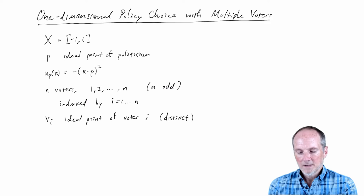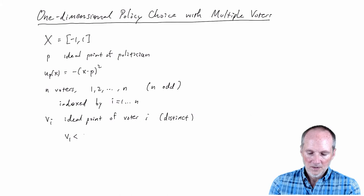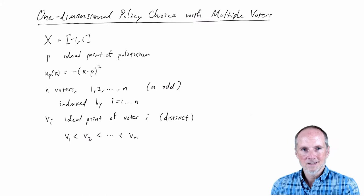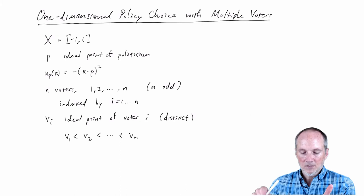It's without loss of generality to assume that voter 1 is the leftmost voter, voter 2 is the next person to the right, and so on. If the ordering were different, we could just assign the numbers to the voters differently — we can rearrange them. So I put the ideal points in order and number the voters so that ideal points are increasing in the voter's index.